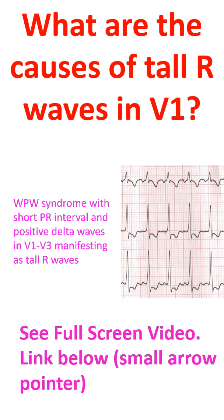In WPW syndrome, it is the anteriorly directed delta wave which appears as a tall r wave in V1.